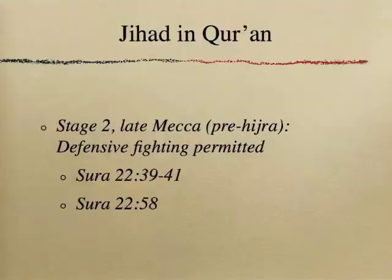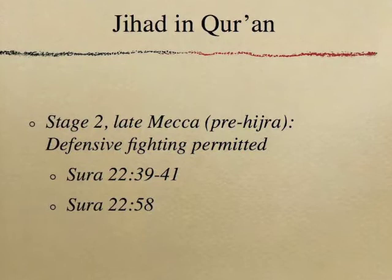Stage two, according to Richard Bailey, was late Mecca, right before the Hijra, right before the migration to Medina. Here we see verses that were given to Muhammad at this time in his prophetic career that give permission to Muslims to engage in defensive warfare. You're allowed to fight to defend the Ummah, to defend Islam. Surah 22, verses 39 to 41, and Surah 22:58, for example.